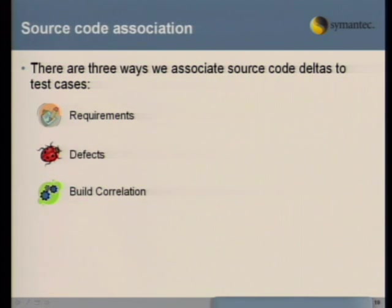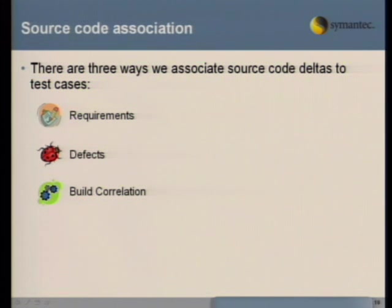The way we've attacked this problem is to look at three different ways to associate source code with test cases: source code delta and source code changes with test cases. The first two — requirements and defects — are a little more straightforward. We can make associations between source code changes and what test cases are affected by doing data mining on those two management tools — requirements management and defect management. Then we do some more direct data mining with build correlation.